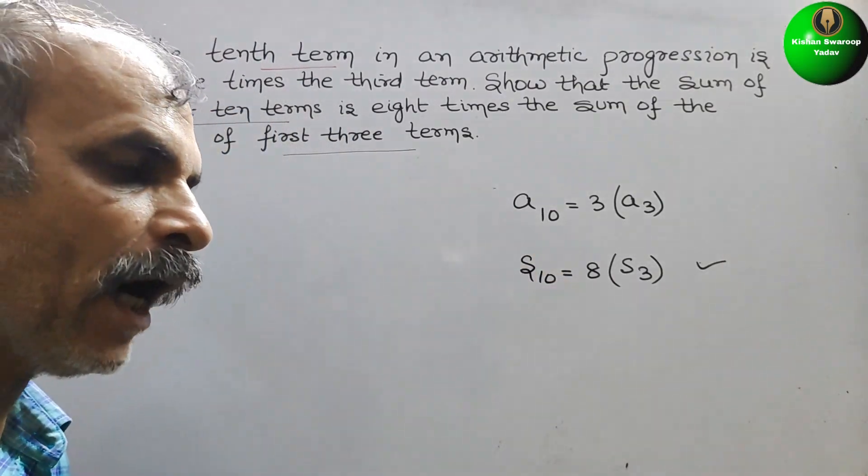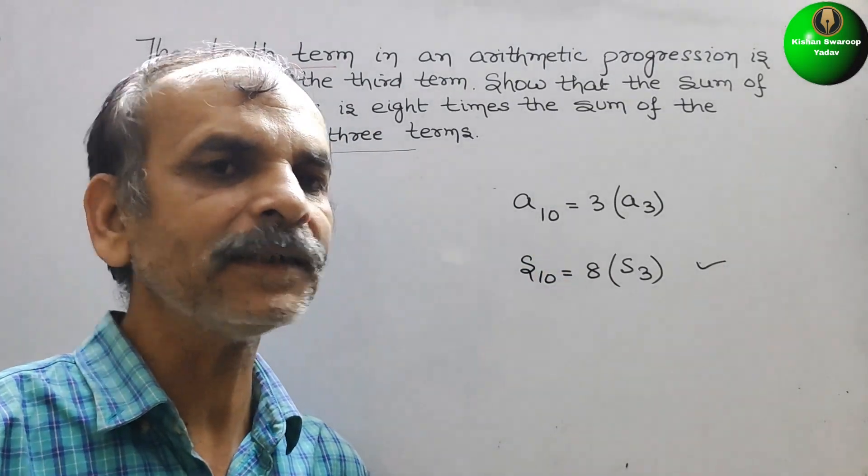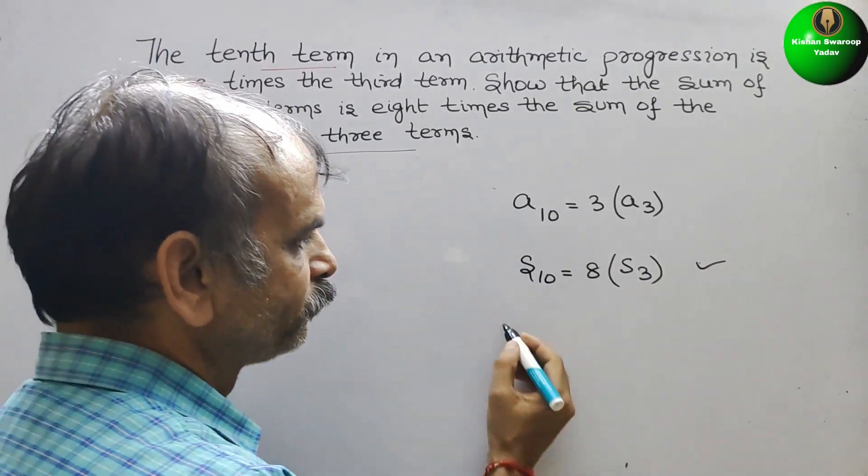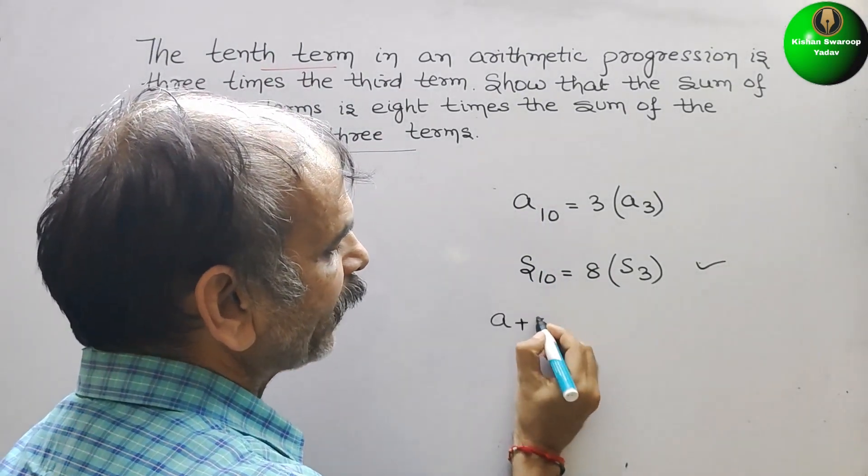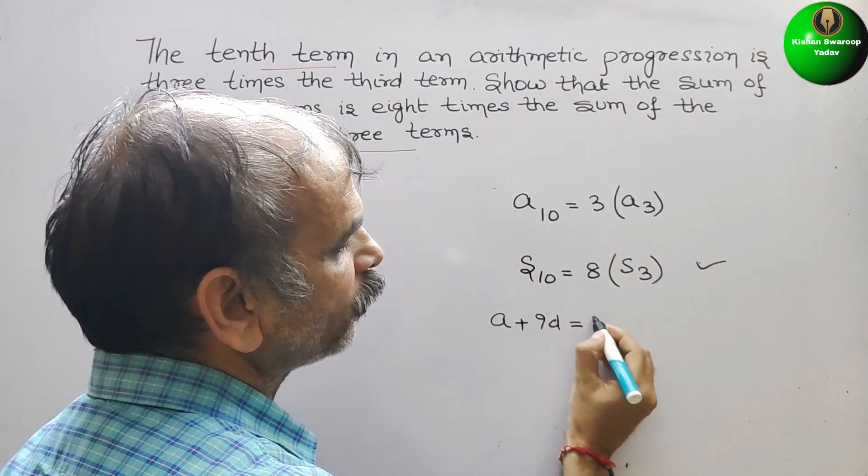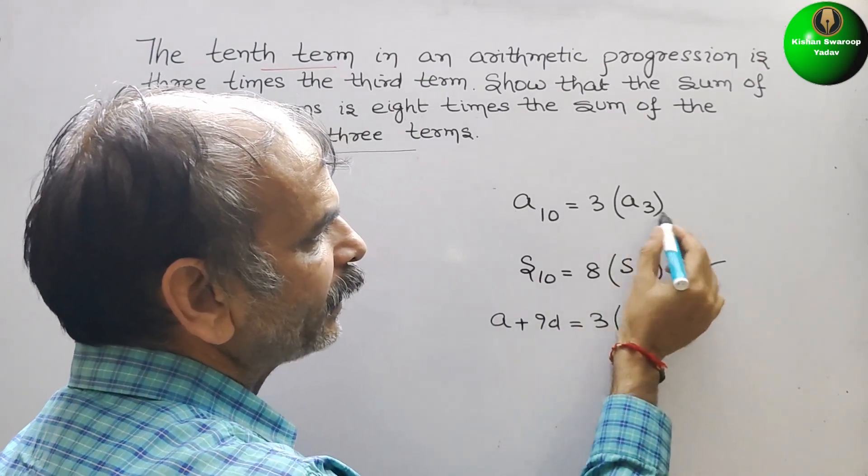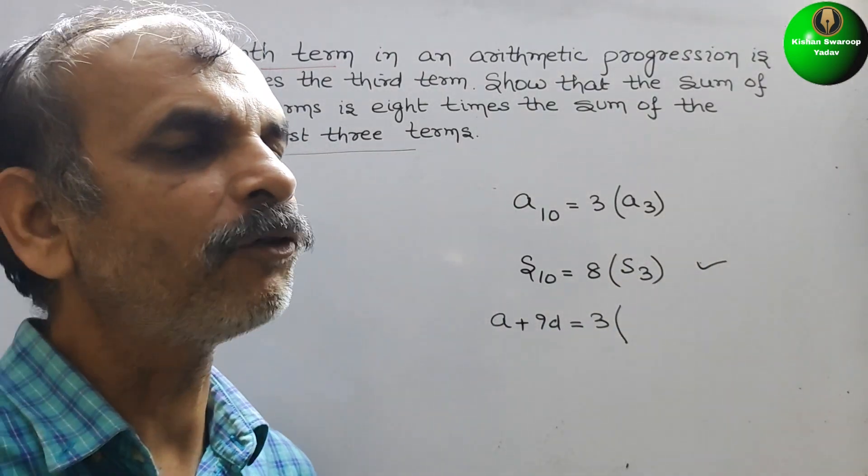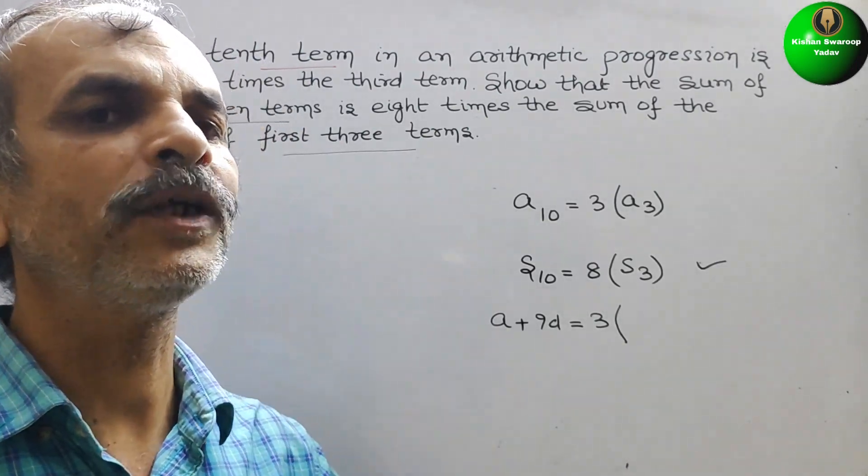A10, how we used to write? A plus 9D. That is equal to 3 and here comes A3. So A3 how we used to write? A plus 2D.